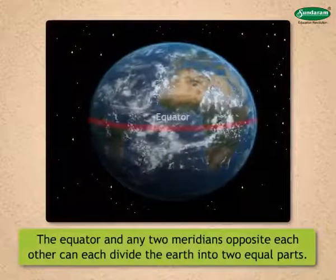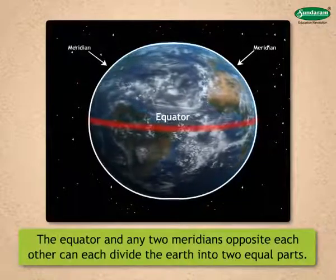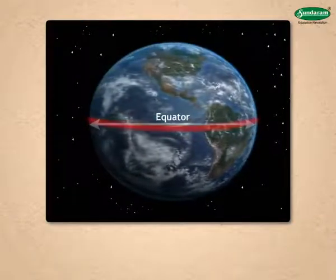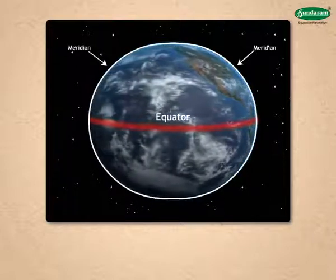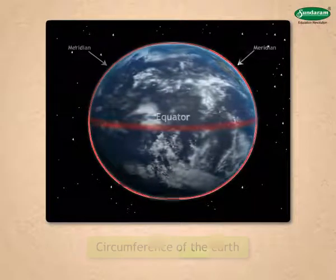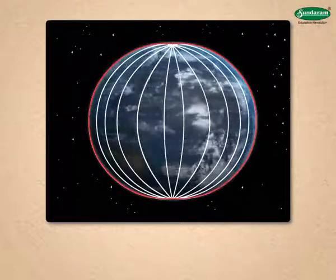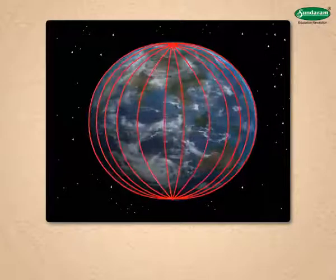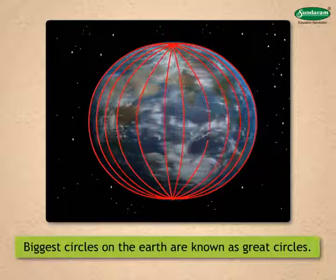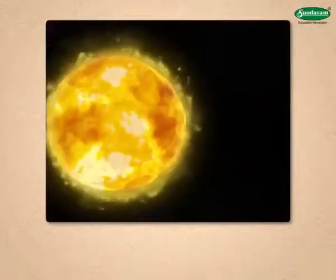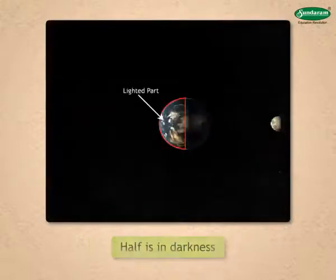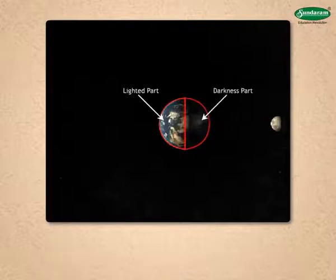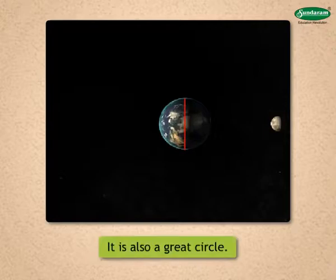The equator and any two meridians opposite each other can each divide the earth into two equal parts. The length of the equator or that of two opposite meridians joined together is equal to the circumference of the earth. Many circles equal to the circumference can be drawn on the earth's surface; such circles divide the earth into two equal parts and, as they are the biggest circles on the earth, they are known as great circles. Due to the rays of the sun, half of the earth is lighted and the other half is in darkness. The line that separates the lighted part from the dark part is known as the circle of illumination, and it is also a great circle.